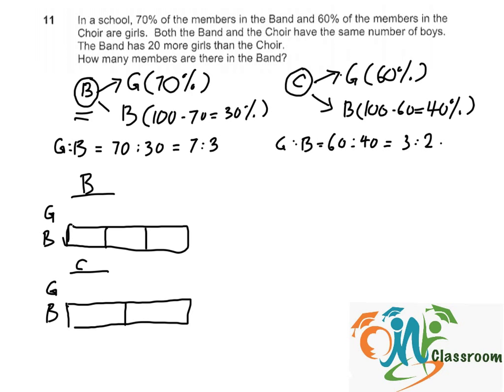We know that the number of boys is the same in both band and choir. So in order to compare, we can divide them into the same unit size. What we need to do is find the lowest common multiple of 3 and 2, which equals 6. So we need to divide the 3 units and the 2 units into 6 smaller units.